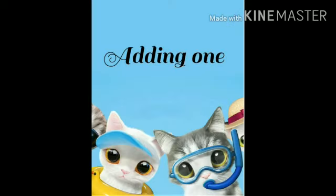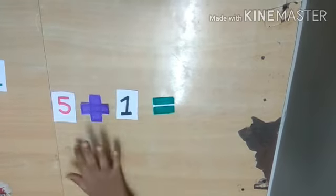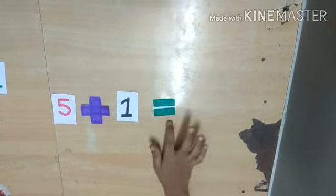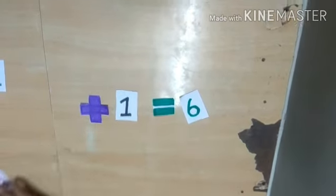Now, let me see, adding 1. If we add with a number 1, we will get the next number. That is, 5 plus 1 is 6. The next number of 5 is 6.